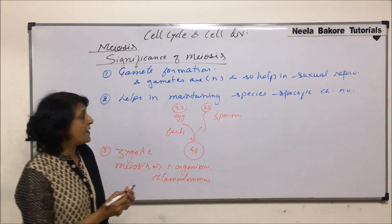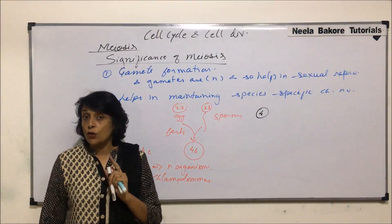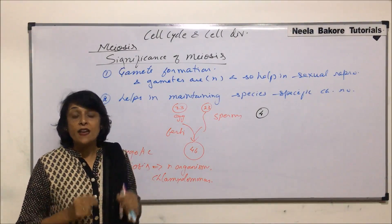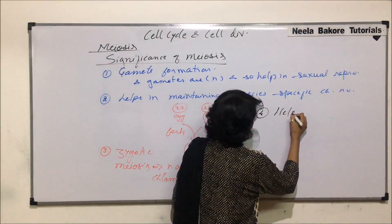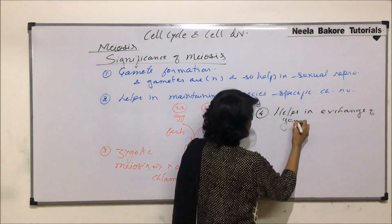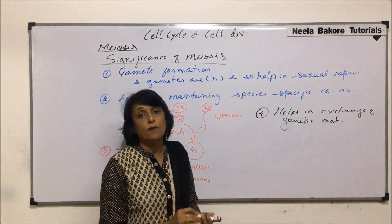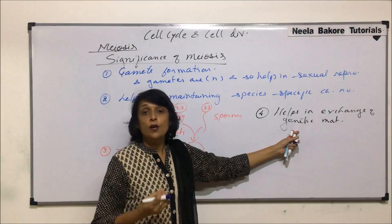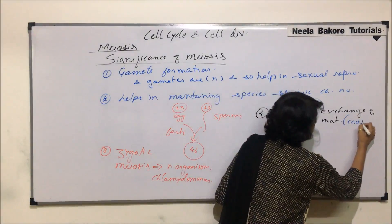Another very significant role: when meiosis takes place, there is crossing over — exchange of genetic material. This exchange of genetic material is very important to bring about variations. So meiosis helps in exchange of genetic material and in bringing about genetic variation during crossing over.